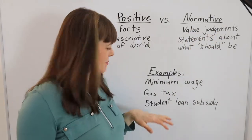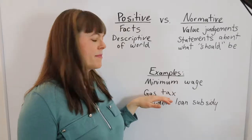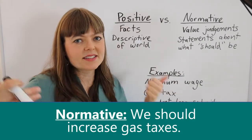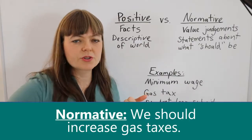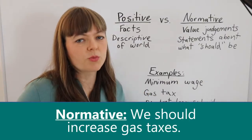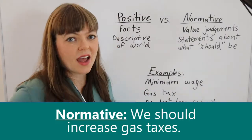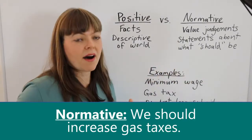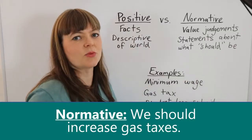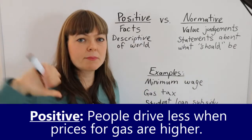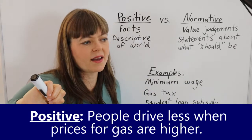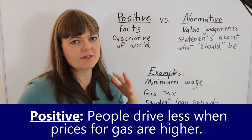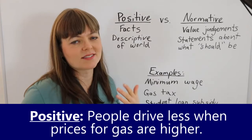With a gas tax policy, the normative statement might be something like: we should increase gas taxes in order to reduce driving, which will reduce carbon emissions. Positive statements might be used to back up any given position. A positive statement about the gas tax situation might be: people drive less when prices for gas are higher. You could look at all different types of data to back up that positive statement.